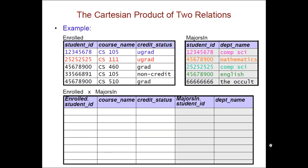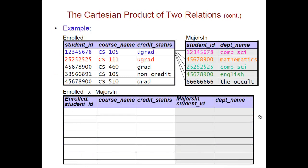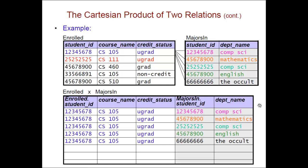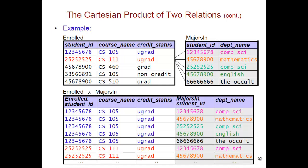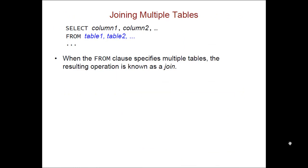What do the rows look like? The first row in enrolled is combined with all of the possible rows in majors_in, and that gives us the first five rows in the Cartesian product. All of these rows have the same values from enrolled, but we're drawing the different rows from majors_in. Then the second row from enrolled is combined with all five rows in majors_in, and so on. We're going to end up with 25 rows in the Cartesian product because each of the five rows from enrolled is combined with five rows from majors_in.